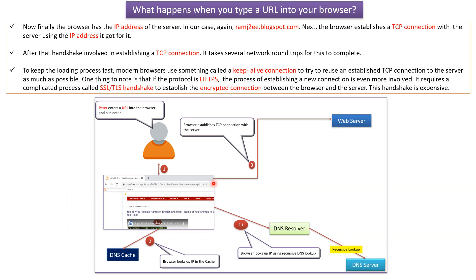Once the browser has the IP address of the server, it establishes a TCP connection with the server. There is overhead involved in establishing a TCP connection, and it takes several network round trips to complete. To keep the loading process fast, modern browsers use something called a keep-alive connection, to reuse an established TCP connection to the server as much as possible. If the protocol is HTTPS, the process is even more involved, requiring a complicated SSL/TLS handshake to establish an encrypted connection between the browser and the server — and this handshake is expensive.